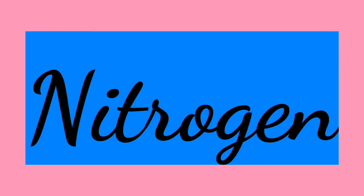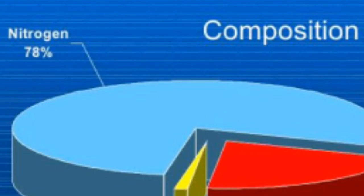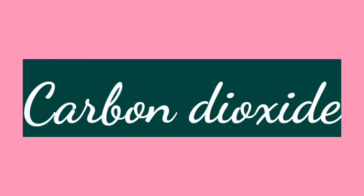Next is nitrogen. Living organisms ko nitrogen ki bhi zaroorat padti hai growth ke liye. But hum directly use le nahi sakte. Most plants take nitrogen from the soil through fertilizers. Animals get nitrogen through the food they eat.